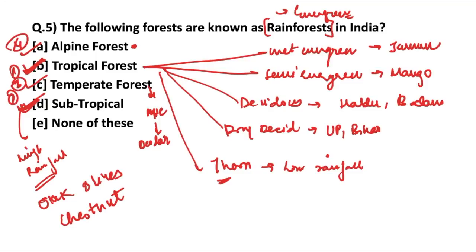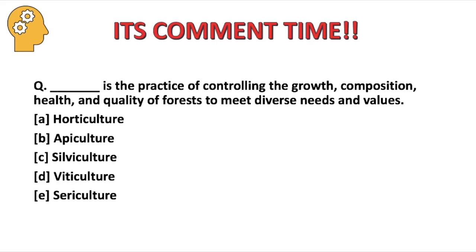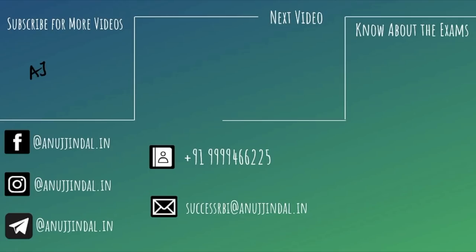Alpine forests are found in the snow-capped mountains of the sub-Himalayan region and are comparatively fewer in quantity. This is how we classify the different forests found in India — very important for the examination. Now for you to comment: 'Dash is the practice of controlling the growth, composition, health, and quality of forest to meet diverse needs and values' — answer that in the comment section. Don't forget to subscribe to our channel and press the bell icon so you don't miss any videos as the exam is around the corner. Thank you so much for watching.